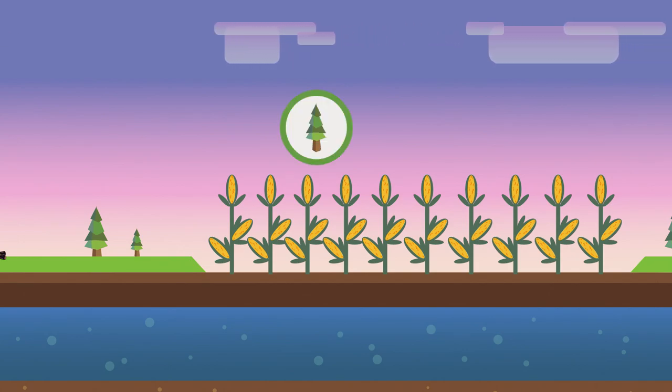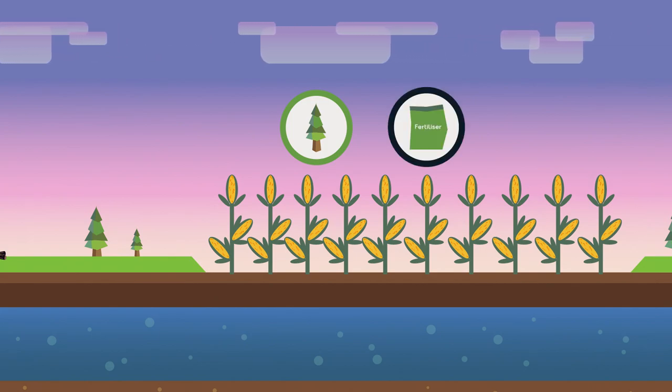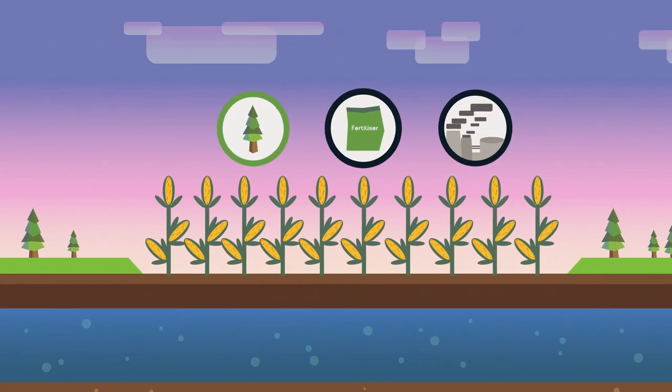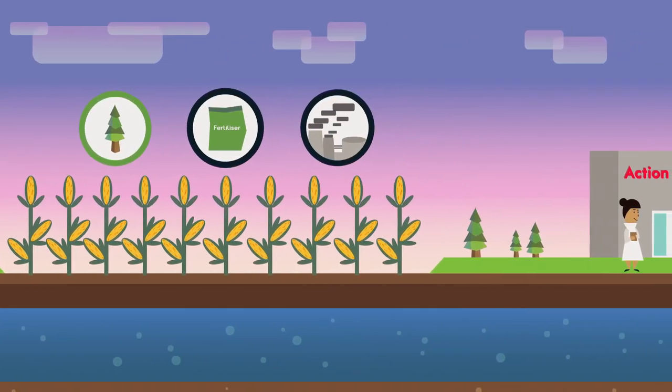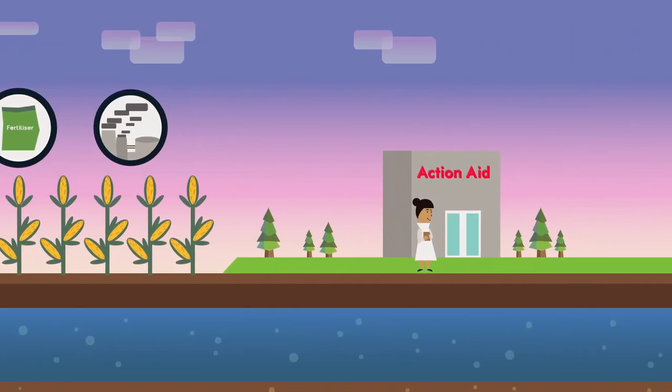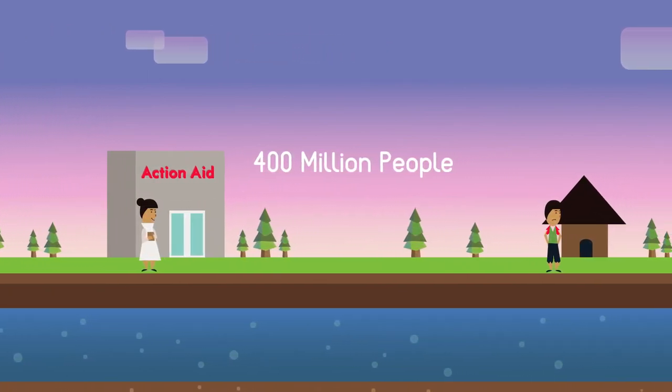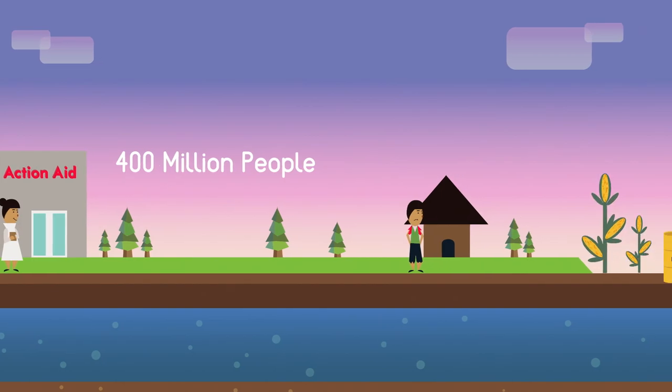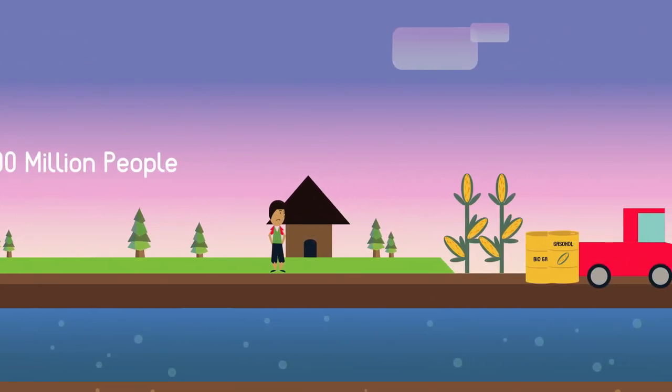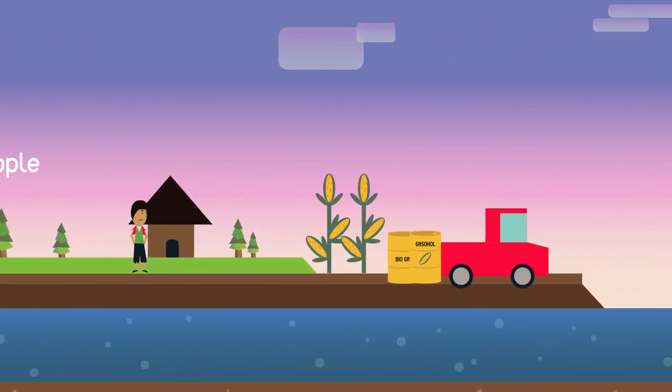Growing biofuel crops uses large amounts of fossil fuel for fertilizer and manufacturing, and it uses large areas of agricultural land needed for food production. ActionAid suggests that half the world's hungry, 400 million people, could eat properly using the food that rich countries burn in their petrol tanks as biofuels.